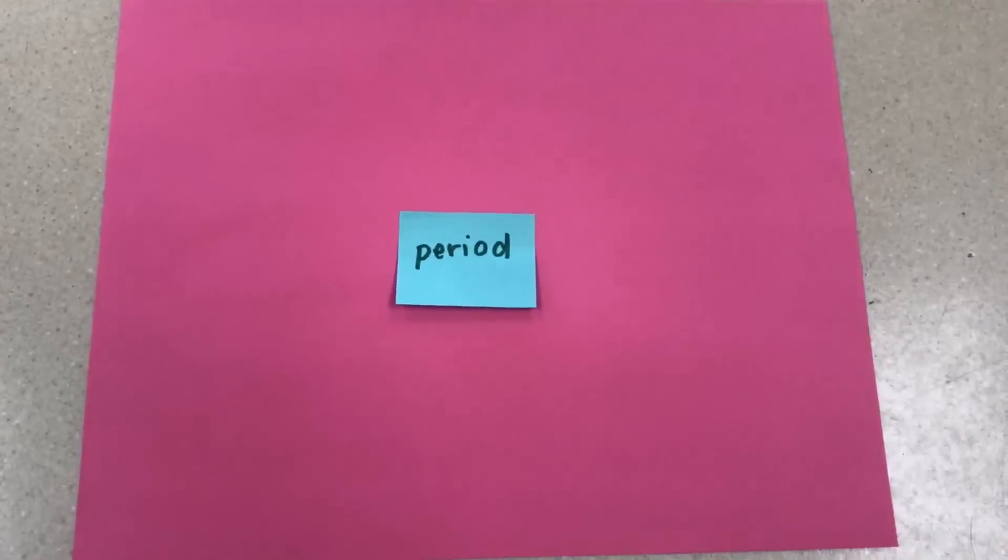To get students designing their own experiment, I have them use sticky notes. So in the center of this page is a sticky note with what we're going to eventually call our dependent variable, what we're testing against. So in this case, it's the period of the pendulum.